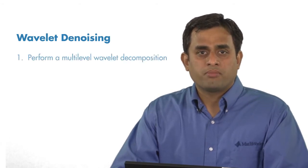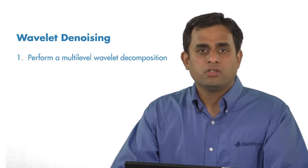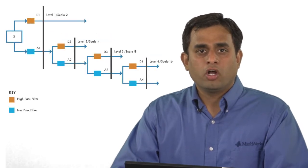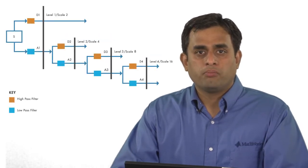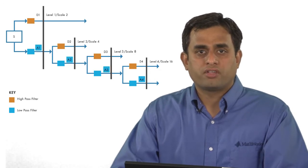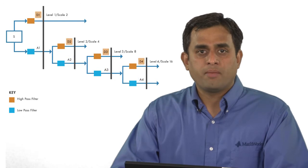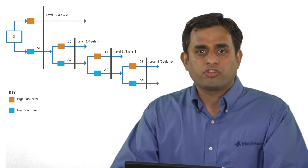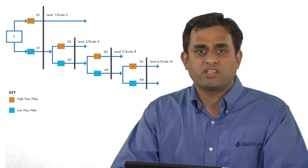Here is an overview of the steps involved in wavelet denoising. Your first step is to obtain the approximation and the detail coefficients. Do this by performing a multi-level wavelet decomposition. Recall that the discrete wavelet transform splits up a signal into a low-pass subband, also called the approximation level, and the high-pass subband, also called the detail level. You can decompose the approximation subband at multiple levels or scales for a fine scale analysis.